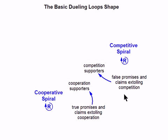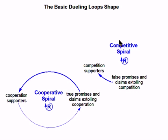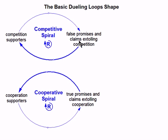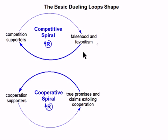But these are extremely powerful concepts — the concept of these two forces and these four nodes. Now let's take this right here and turn it into a simple little loop with just those nodes, and let's do the same thing with this one. We've still got a little bit of improvement to go on these two node names. Let's change this one from 'false promises and claims extolling competition' to 'falsehood and favoritism.' Falsehood and favoritism is a higher level of abstraction — it covers many, many things.